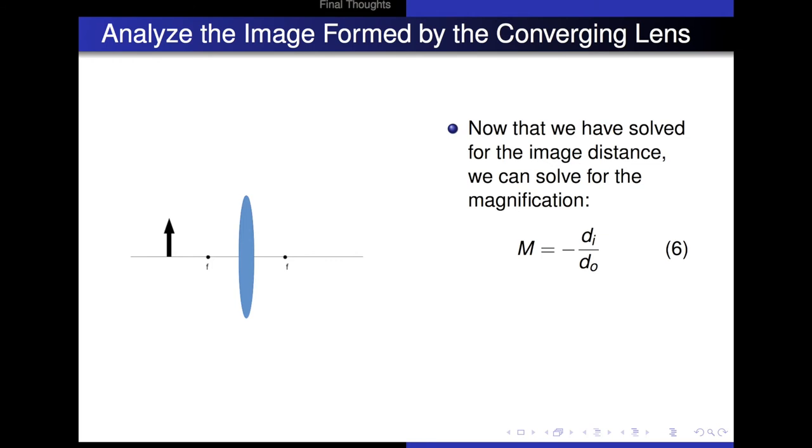Now that we've solved for the image distance, we can solve for the magnification. So magnification is equal to minus di divided by do. Plugging in 72 for the image distance and 90 for the object distance, we get minus 0.8.